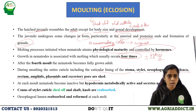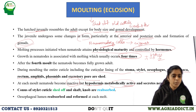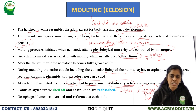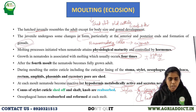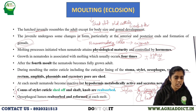During molting, the nematode becomes inactive and the hypodermis, involved in new cuticle formation, becomes metabolically active. Importantly, the stylet has three parts: conus, shaft, and knob. The conus is shed off at each molting, whereas the shaft and knob are reabsorbed at each molting. Also, the esophageal lumen is reabsorbed and reformed at each time of molting. These two points are most important from a JRF exam perspective.